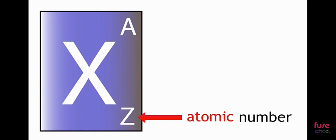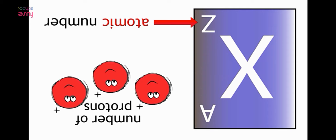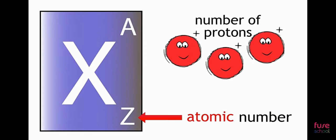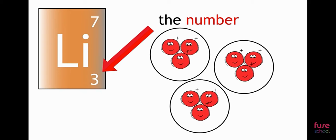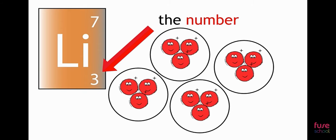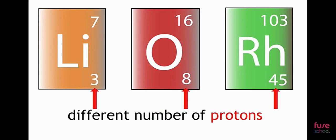The atomic number has a symbol Z. This number tells you how many protons are in one atom of an element. The number is always the same for all atoms of a particular element. Atoms of different elements have a different atomic number, meaning they have a different number of protons.